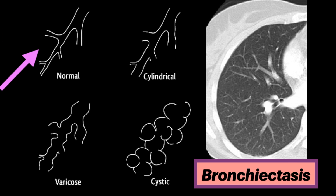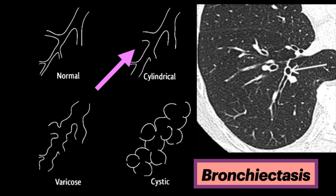Bronchiectasis may be classified as cylindrical, varicose, or cystic, depending on the appearance of the affected bronchi. This arrow points to a normal airway with normal distal tapering. Cylindrical bronchiectasis is where the bronchi have a uniform caliber — they do not taper and they have parallel walls. This is called the tram track sign and signet ring sign. This is the most common form, up to about 50% of cases.